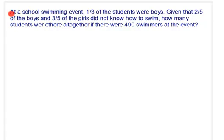Now let's read the next question. At a school swimming event, 1/3 of the students were boys. Given that 2/5 of the boys and 3/5 of the girls did not know how to swim, how many students were there altogether if there were 490 swimmers at the event? Let's draw a model for this.